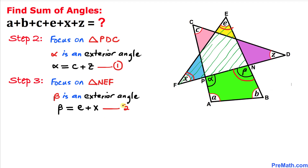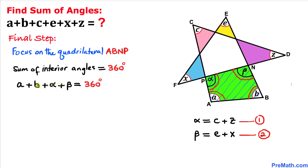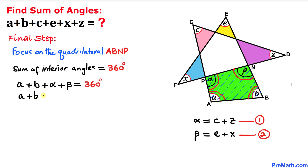Here's our final step. Let's focus on this green quadrilateral ABNP. We know that the sum of the interior angles a, b, alpha, and beta equals 360 degrees. So we can write: a + b + alpha + beta = 360°. We know that alpha = c + z from equation one, and beta = e + x from equation two.